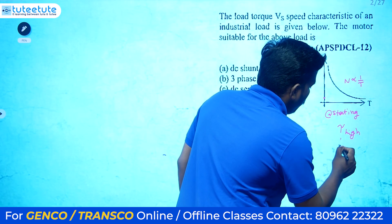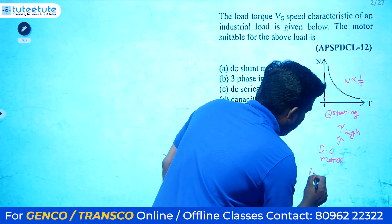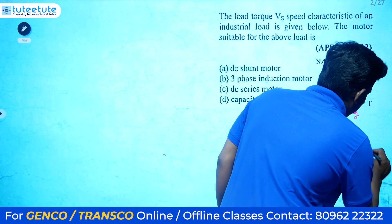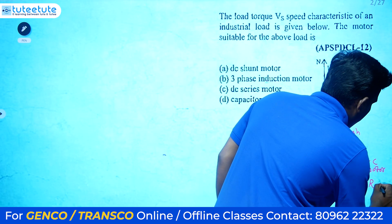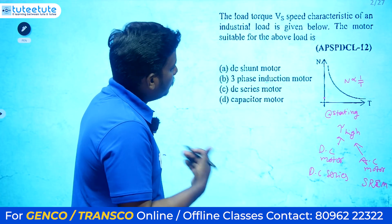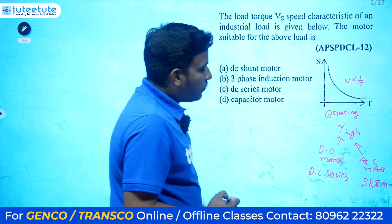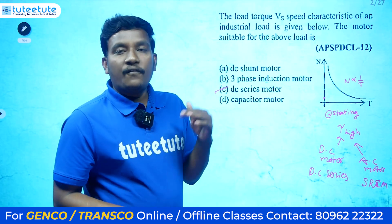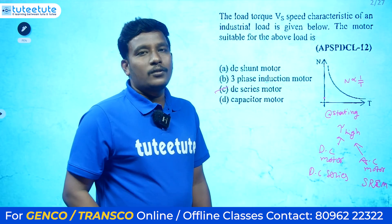By observing these two conditions, if it is a DC motor we prefer the DC series motor. If we want to use an AC motor, we go for a slip ring induction motor. The options given are: DC shunt motor, three-phase induction motor, DC series motor, and capacitor motor. The most preferred for high starting torque is DC series motor. If DC series motor is not in the options and slip ring induction motor is listed, then we choose the slip ring induction motor.